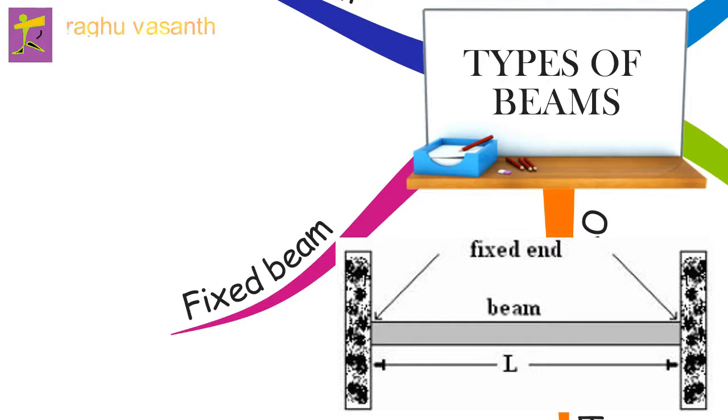If perfect end fixing can be achieved, built-in beams carry smaller maximum bending moments and have smaller deflections than the corresponding simply supported beams with the same loads applied. Therefore, they are stronger and stiffer. However, the need for high accuracy in aligning the supports and fixing the ends during erection increases the cost. Small subsidence of either support or temperature changes can set up large stresses. The end fixings are also normally sensitive to vibrations and fluctuations in bending moment.